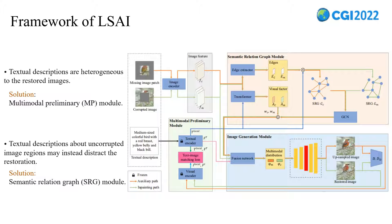In this model, we adopt two-path training modes following previous work. The model includes an inpainting path and an auxiliary path to utilize the missing image patches as supervision for restoration. The inpainting path is fed with the corrupted images and the auxiliary path is fed with the missing image patches. Both corrupted images and missing image patches are used during training, while only corrupted images are used during testing.